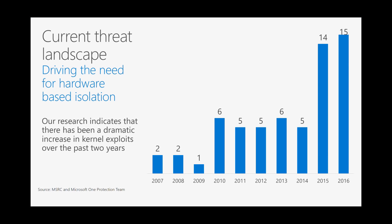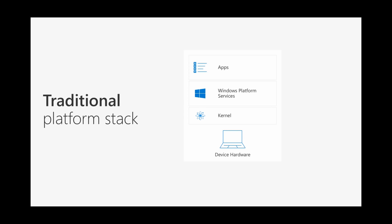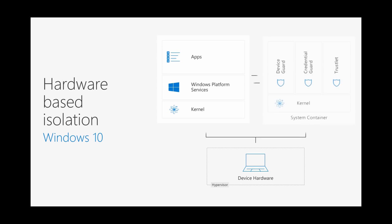We're seeing data collected internally at Microsoft of exploits in the wild attacking the kernel. Attackers are moving down the stack, focusing their energy where they can get the most bang for the buck, and this is a dramatic increase. This has led us to more virtualization strategies to isolate the host from untrusted behavior. The traditional platform stack has no way to defend against a vulnerability within an application — attackers can get out of that application, elevate privilege, and take over the whole machine.